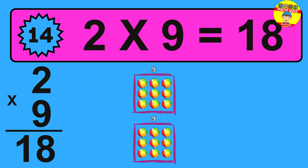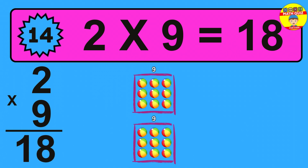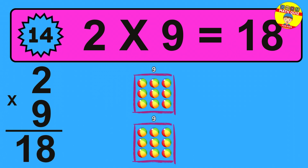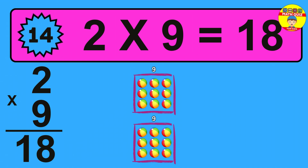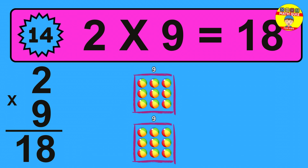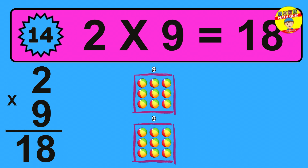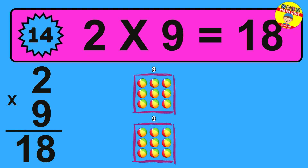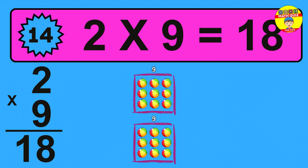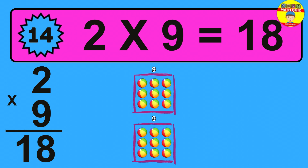Question 14: 2 times 9 equals what? The answer is 2 times 9 is 18. To calculate, we have 2 groups with 9 balls each one. So how many balls do we have? 18 balls.